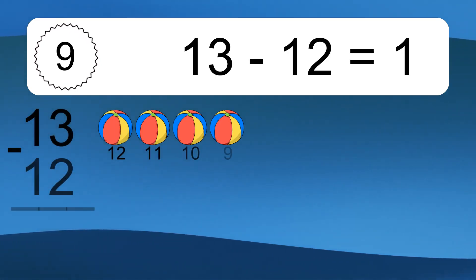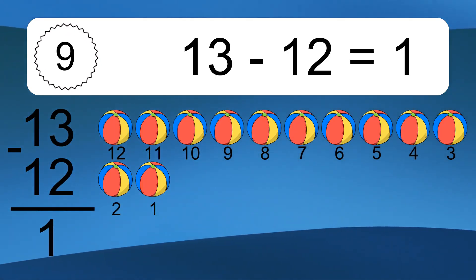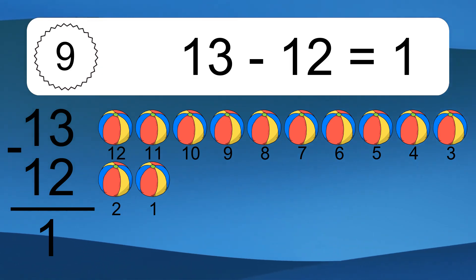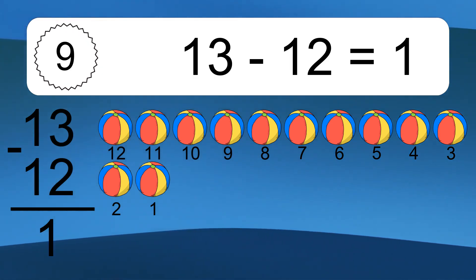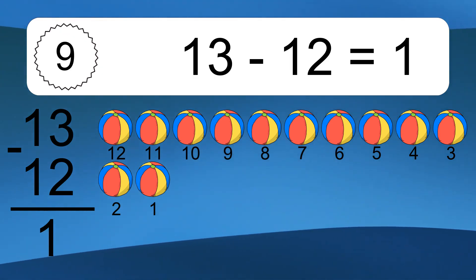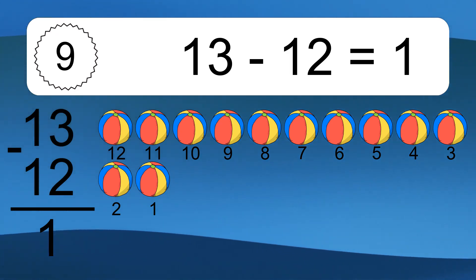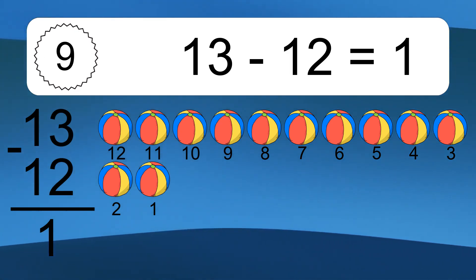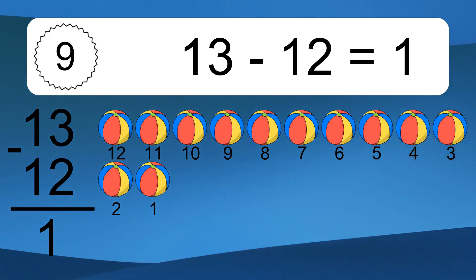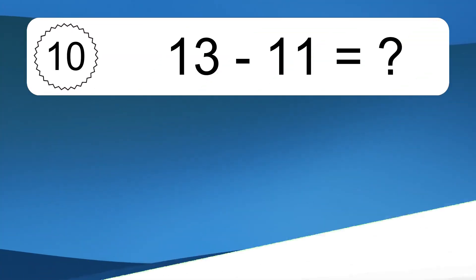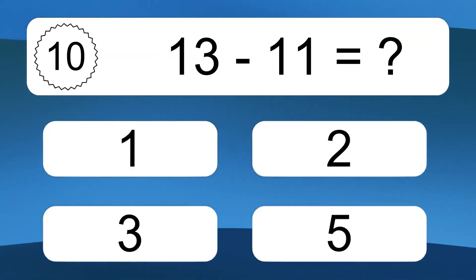13 minus 12 equals what? 13 minus 12 equals 1. Let's count it. 12, 11, 10, 9, 8, 7, 6, 5, 4, 3, 2, 1.